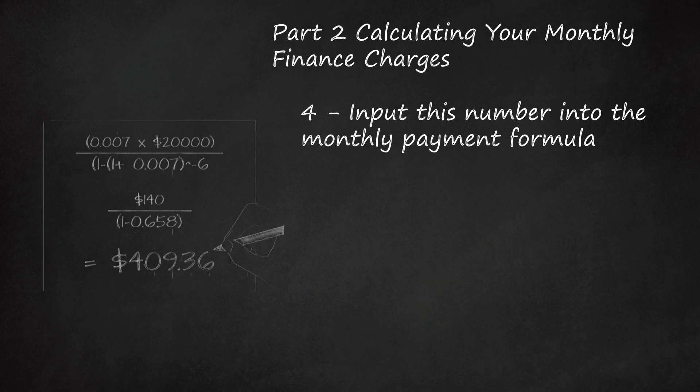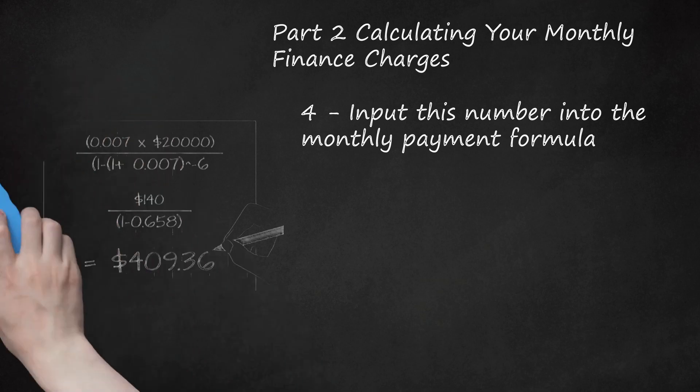In our example, assuming a loan duration of 5 years or 60 months, the calculation goes as follows: Monthly payment = (0.007 × $20,000) ÷ (1 − (1 + 0.007)^−60). Monthly payment = $140 ÷ (1 − 1.007^−60). Monthly payment = $140 ÷ (1 − 0.658). Monthly payment = $140 ÷ 0.342. Monthly payment equals $409.36. This number may be off by a few cents due to rounding.